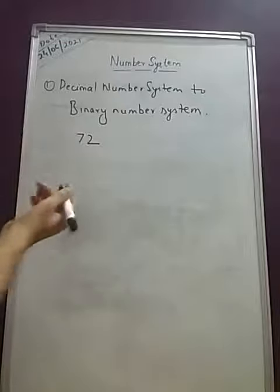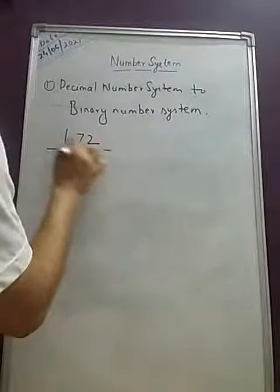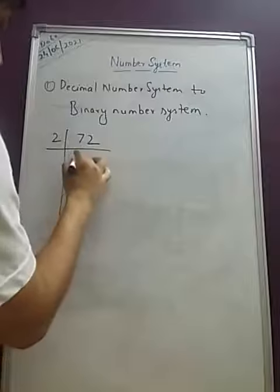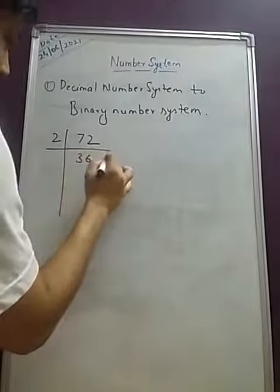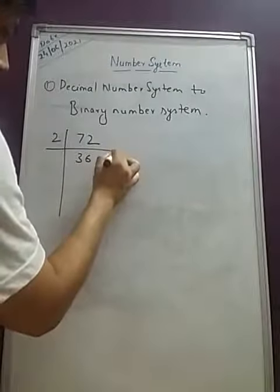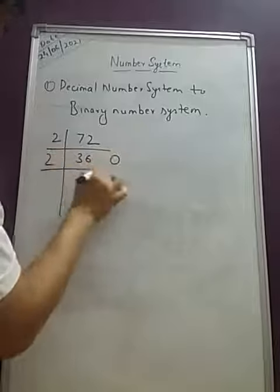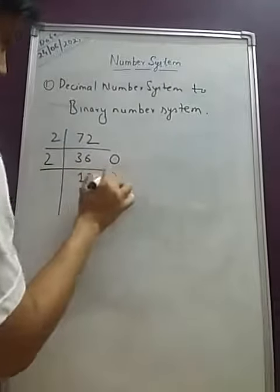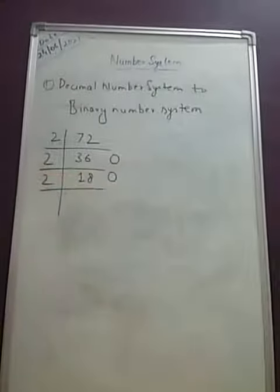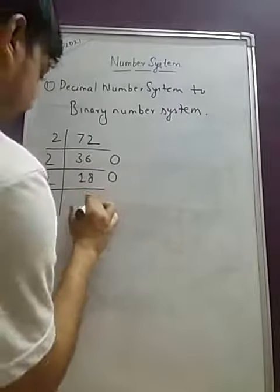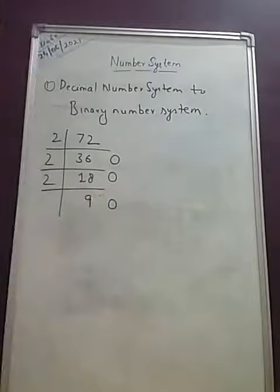So what we will be doing, we will be using the same method. It will go from 2 and it will be divided by 36 times and 0 will be the remainder. Again 18 will be here, 0 will be the remainder. Again 9 is here, the remainder is 0.